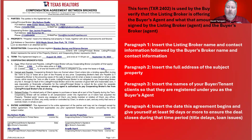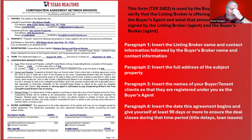Here is the form. It is a one-page form, and this is going to be used when a property is listed by a real estate broker — a listing agent. As of August 17th, 2024, commissions are no longer shown on the MLS, so any buyer's agent co-op fee is not going to be shared on the MLS. You'll need to contact the listing agent and find out if there is a commission being offered. Once there is, this is the form you'll use to guarantee that commission is going to be paid.